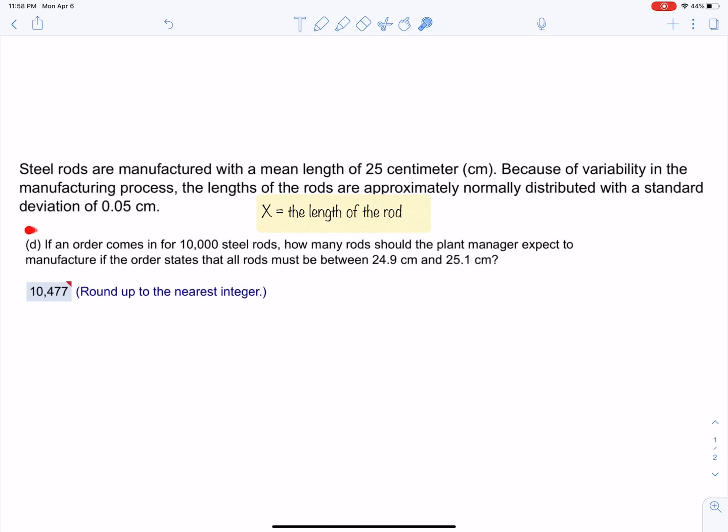I'm going to focus on part D, the hardest part of this question. It says if an order comes in for 10,000 steel rods, how many rods should the plant manager expect to manufacture if the order states that all rods must be between 24.9 and 25.1 centimeters?